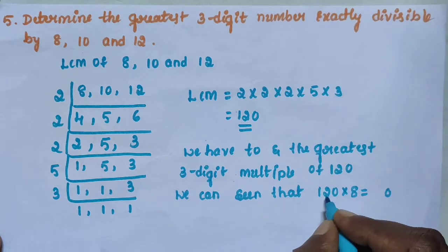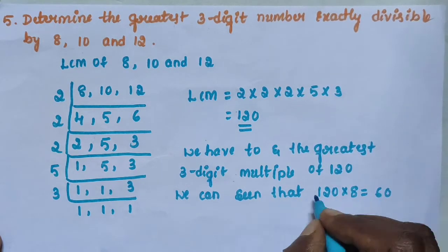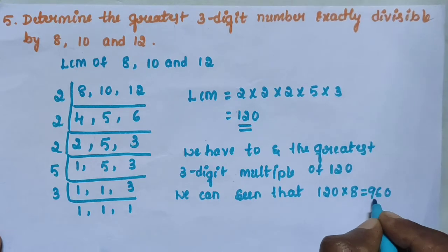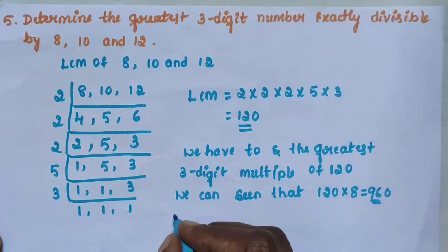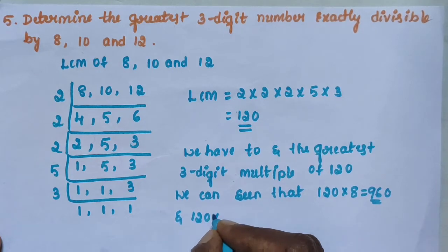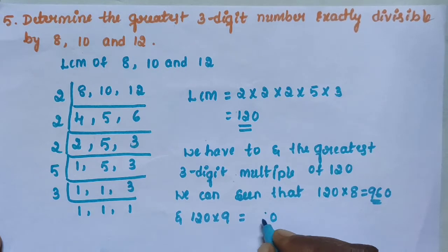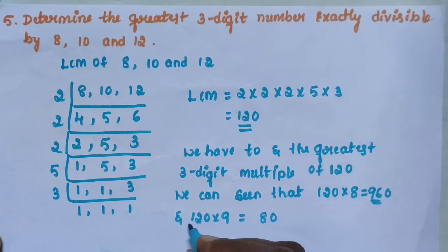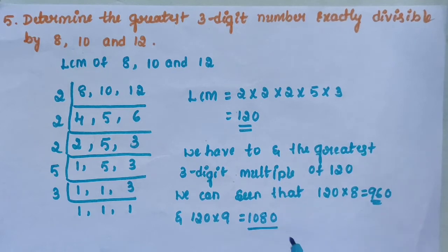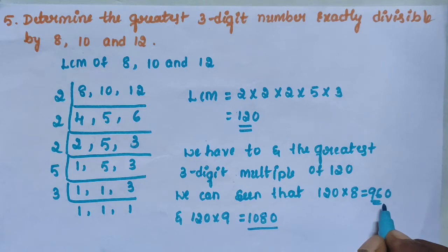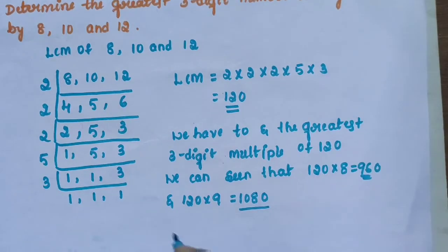120 × 8: 8 × 0 = 0, 8 × 2 = 16, write 6 carry 1, 8 × 1 = 8 plus 1 = 9. So 120 × 8 = 960. And 120 × 9: 9 × 0 = 0, 9 × 2 = 18, write 8 carry 1, 9 × 1 = 9 plus 1 = 10. So 120 × 9 = 1080. 1080 is a 4-digit number and 960 is a 3-digit number and is the greatest 3-digit number.